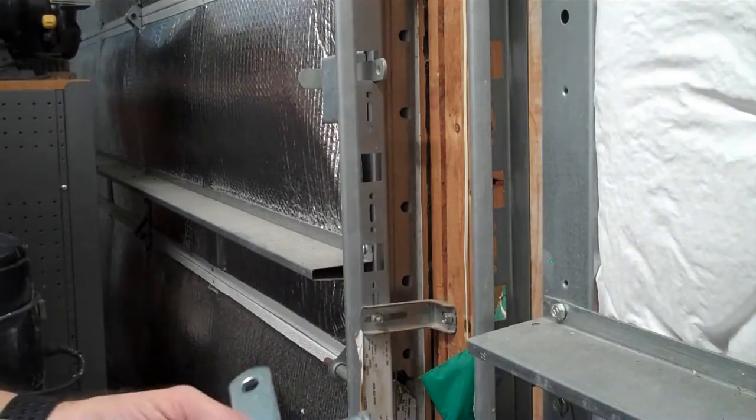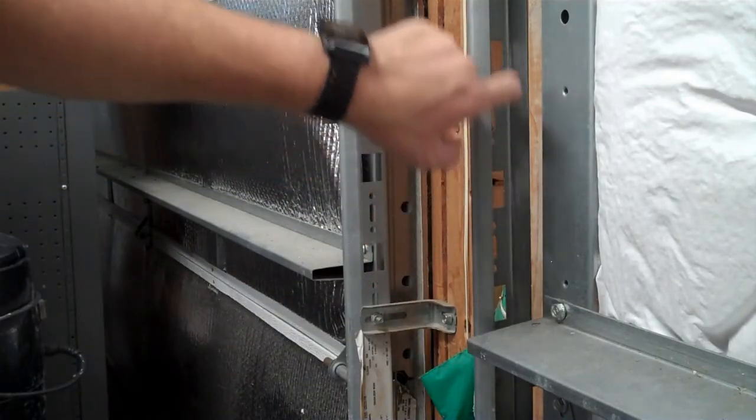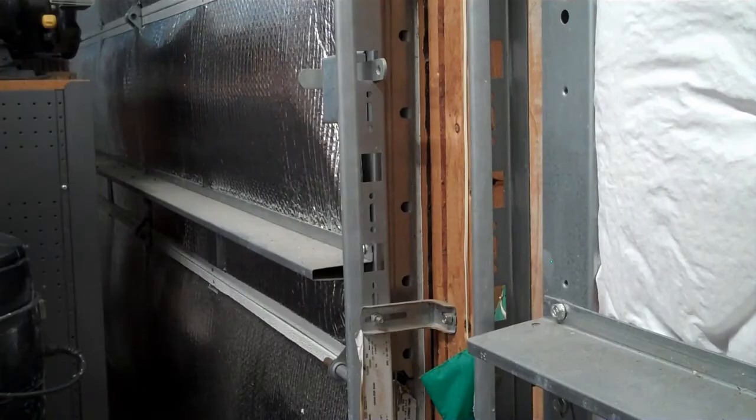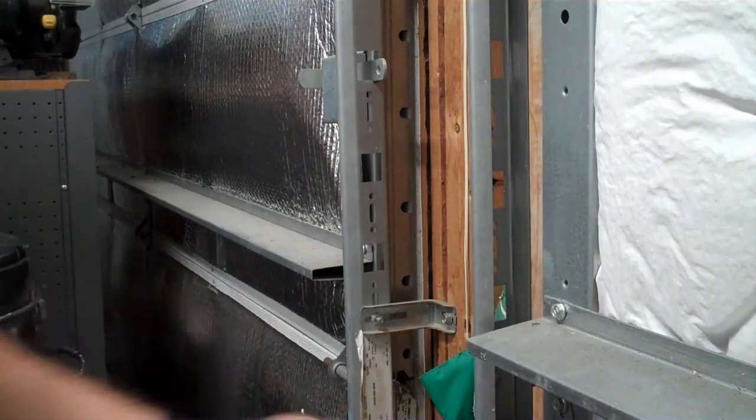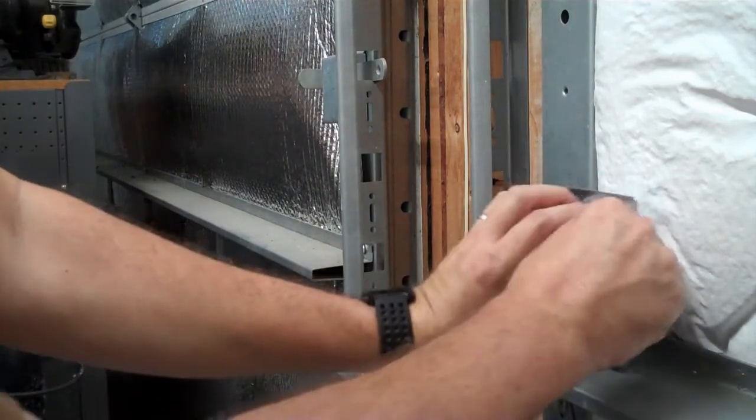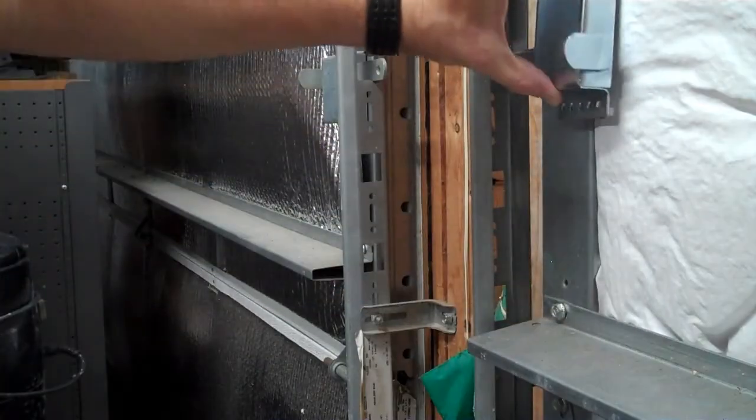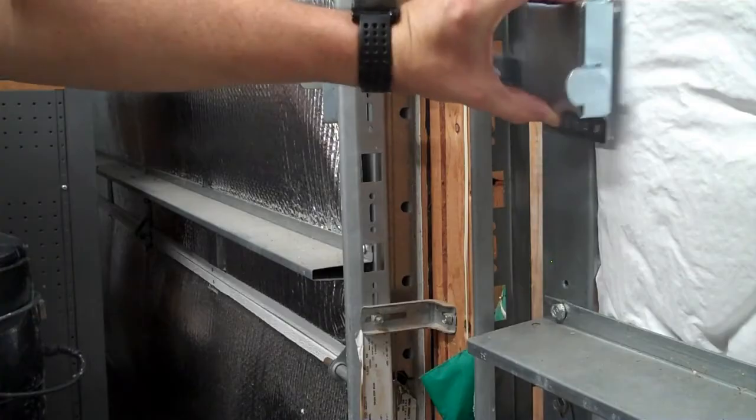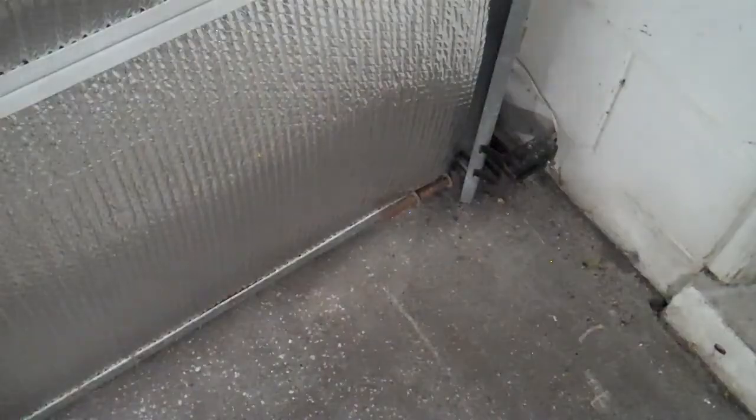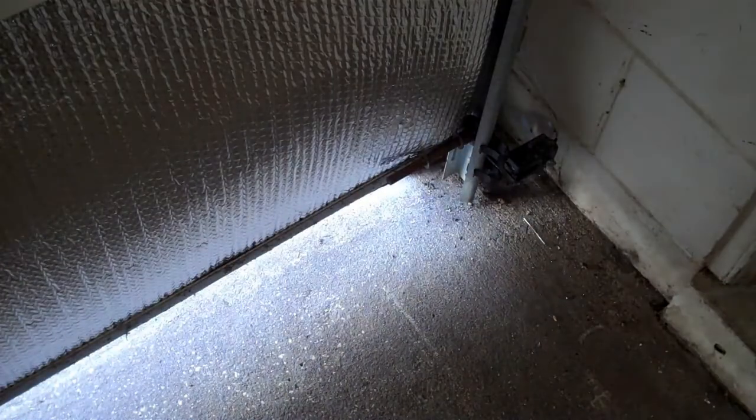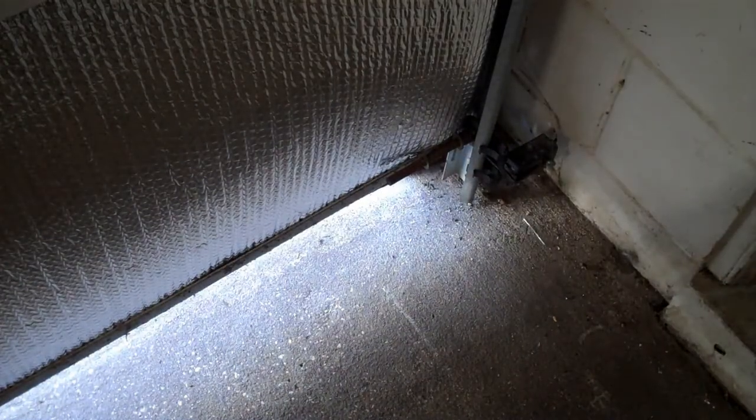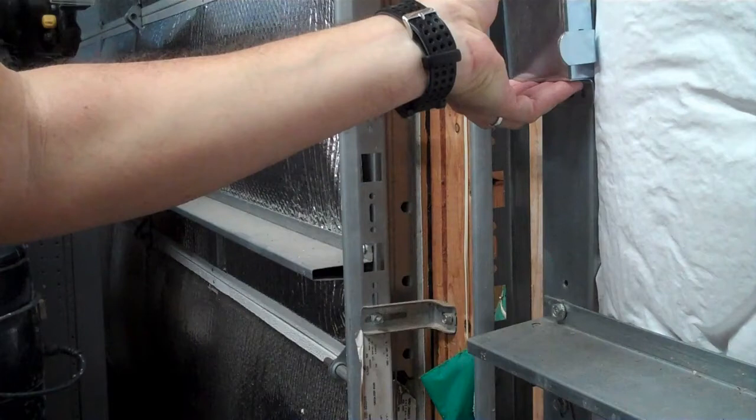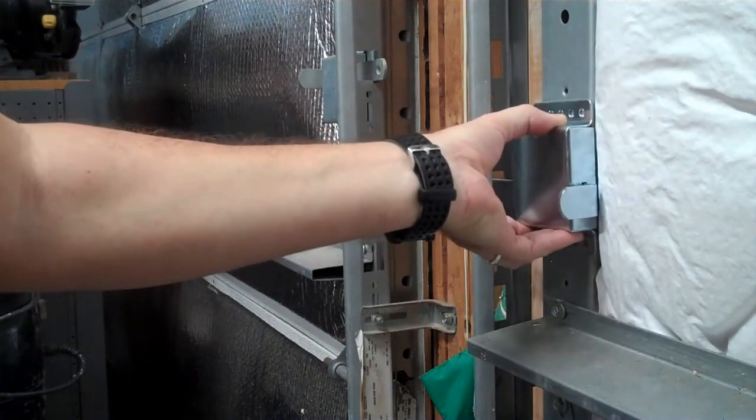So when you're installing this, you want to put it on the lowest one of these slots that you can. You might not be able to hit the bottom one. Maybe there's a hinge or a support piece in the way so you can't get down that low. But don't put it in the top one here if you can put it in the middle one because if you can put it in this middle one, that means the door can go up that far and you can lock it closed slightly open.